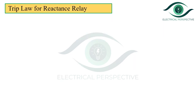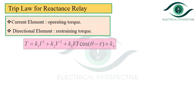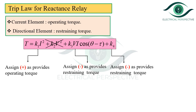Now let us derive the trip law for the reactance relay. The current element provides the operating torque and the directional element provides the restraining torque. Rewriting the universal torque equation: the current element provides operating torque, so we assign a positive sign to K1·I². There is no role of the voltage element, so K2·V² = 0. The directional element provides restraining torque, so we assign a negative sign to K3·VI·cos(θ − τ).